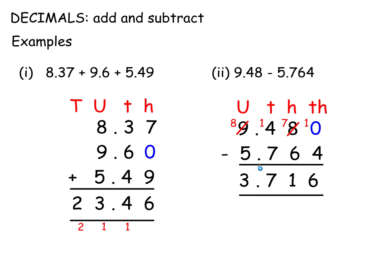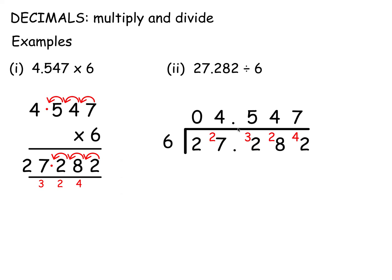So: for addition and subtraction, keep the decimal point in the same position and line up the figures according to place value. For division, keep the decimal point in the same position. For multiplication, just put the decimal point in at the end. That's add, subtract, multiply, and divide decimals without a calculator.